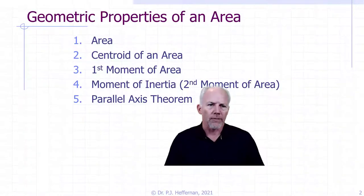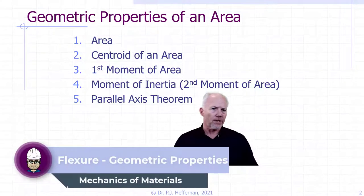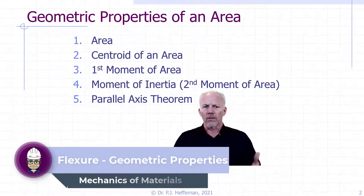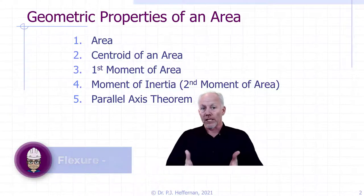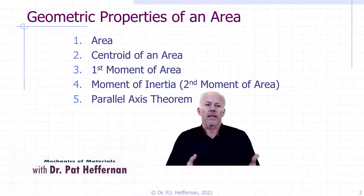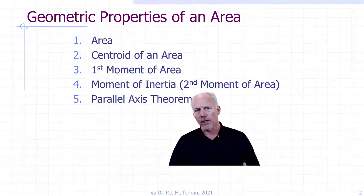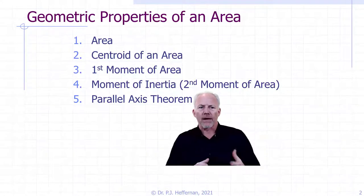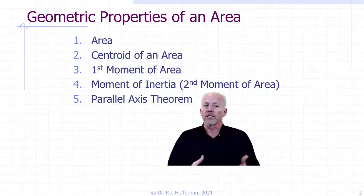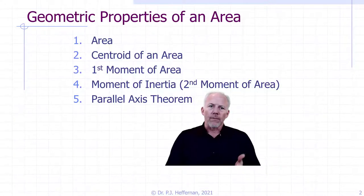In order to look at flexure, we need to review some of the geometric properties that are implicated in flexure. Recall we looked at the geometric property J, or the polar moment of inertia, when we were looking at torsion. A geometric property is a property that is solely affected by the shape of the cross-section — it's not affected by the material or other external factors. In your textbook, geometric properties are reviewed in Appendix A.